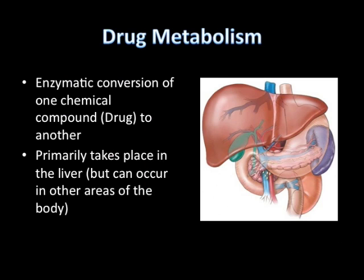We're going to focus on drug metabolism, which is the enzymatic conversion of one chemical compound or drug to another. Primarily it takes place in the liver, but can occur in other areas of the body.